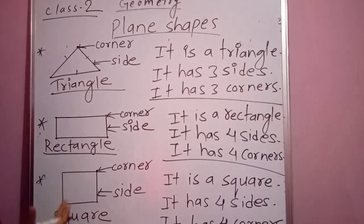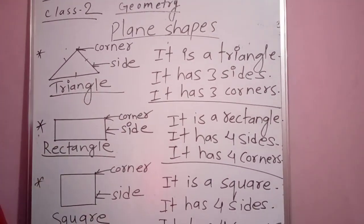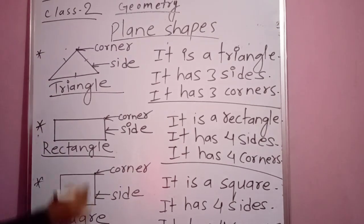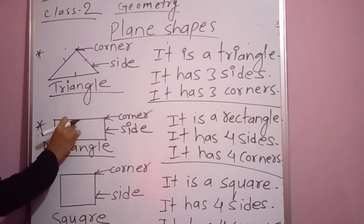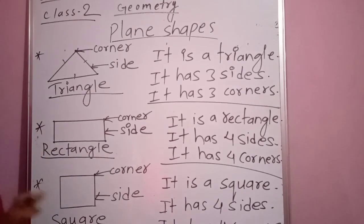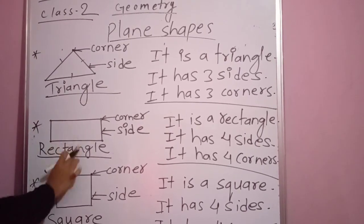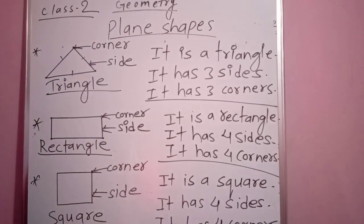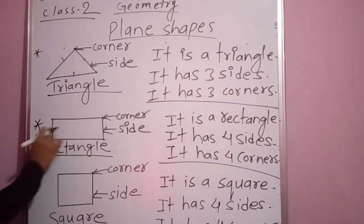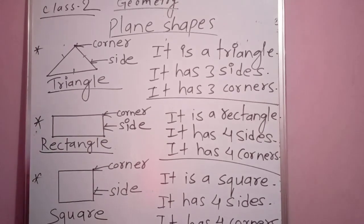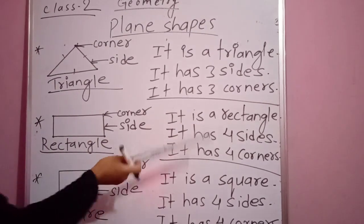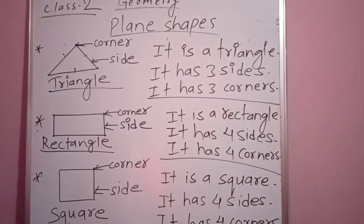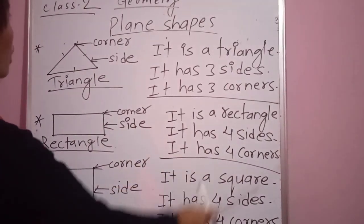The extra thing about the rectangle that I am going to tell you — listen very carefully — is that these two opposite sides are equal to each other. So, the rectangle: it is a rectangle, it has four sides, and it has four corners.